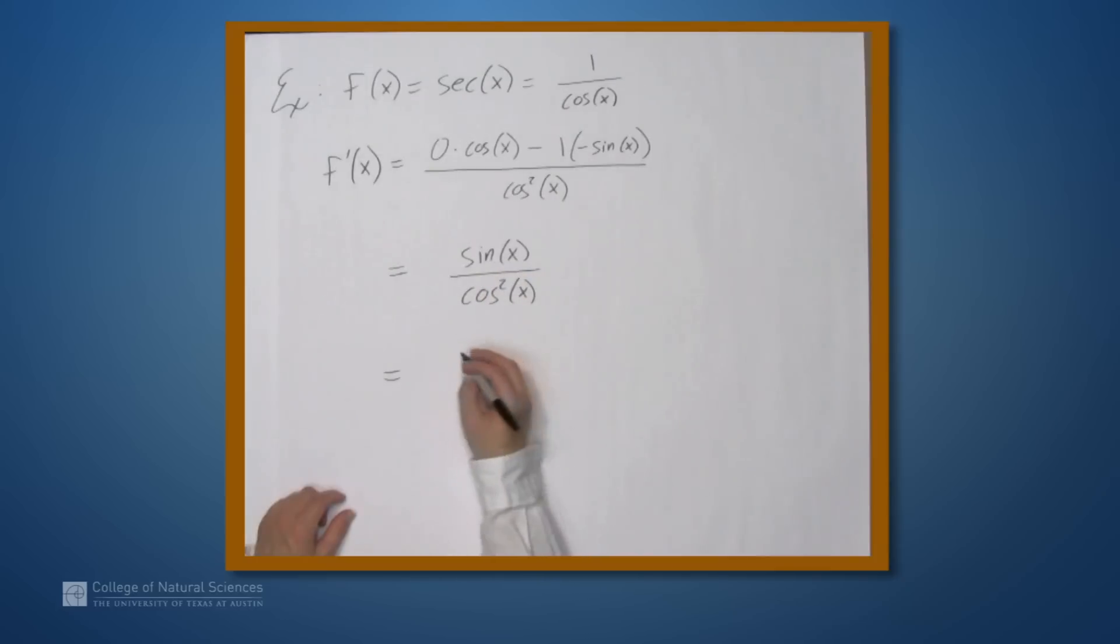So let's write this as 1 over cosine x times sine of x over cosine x. So we're just splitting this cosine squared in the denominator into two pieces, and we're putting a 1 in one numerator, and a sine of x in the other numerator.